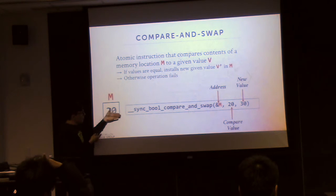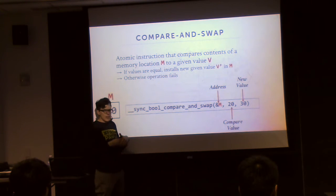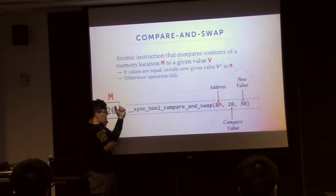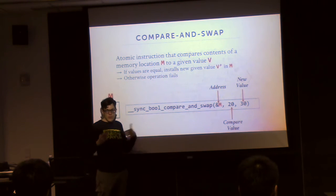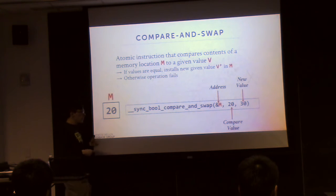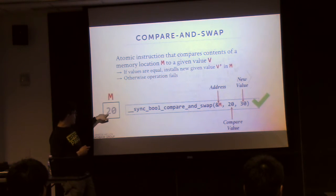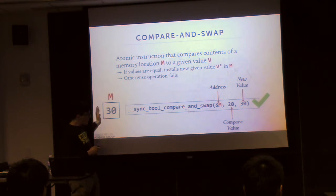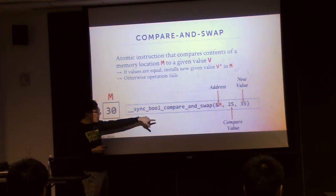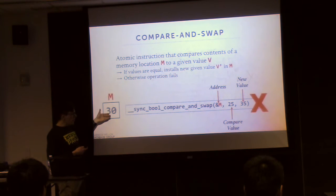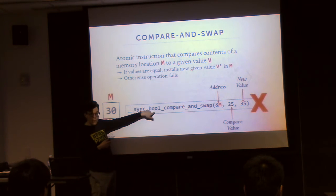I'm showing sync_bool_compare_and_swap here. Sometimes they have different names. This one returns a bool whether it succeeds or not. There are others that support different types — 8-bit, 16-bit, 32, 64. In this example, we check: is the current value 20? If yes, we're allowed to change it to 30. That's all done in a single instruction. If you come back and try to set the compare value to 25 and install 35, in this case the compare would fail — it would not update the value and returns false.